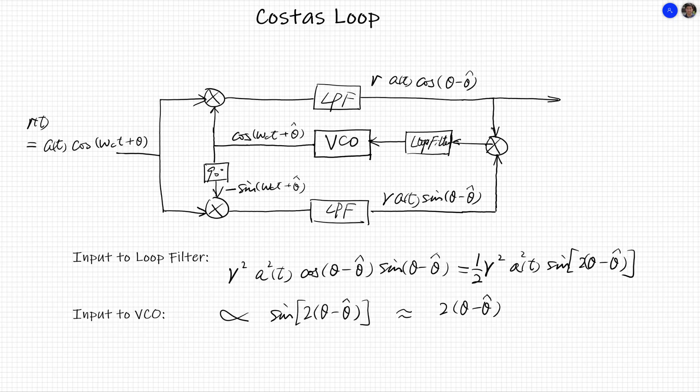Because the input of VCO is this phase difference, positive, negative, or zero, and the output correspondingly will be a high frequency, a low frequency, or its nominal frequency. When the loop is locked, we will have this estimated phase theta hat equal to original phase theta, and the top branch output becomes proportional to the message bearing signal A T. Therefore, a Costas loop can do carrier synchronization and at the same time output a demodulated signal proportional to the original message bearing signal A T.